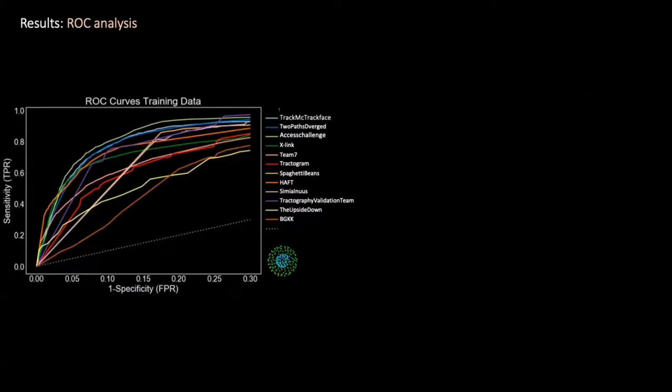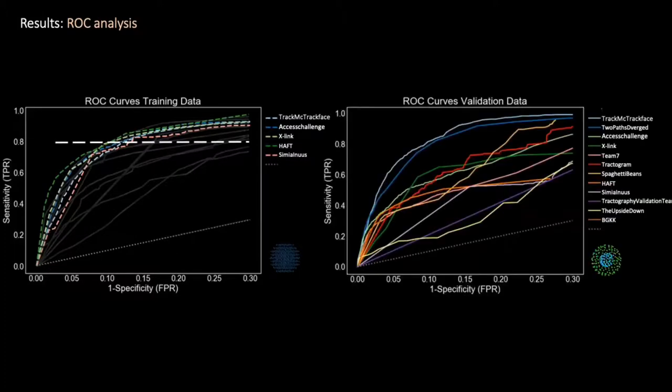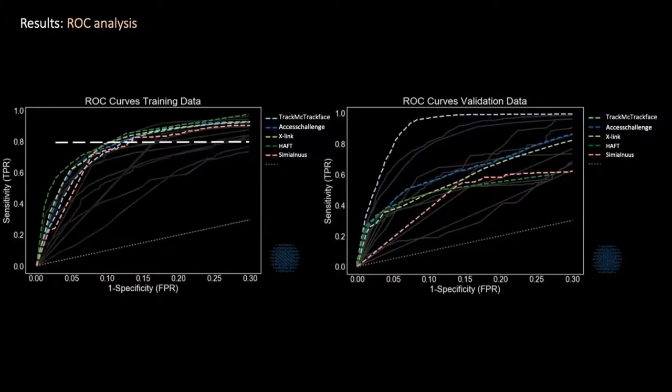Here I'm showing the ROC curves for all the submissions for the HCP acquisition scheme for the training case. And these are the overlaid ROC curves for the DSI acquisition scheme. Although there obviously is a trade-off between true and false positive reconstructions, most submissions achieve 80% sensitivity within 30% false positive rate. Note these are the results for the validation case for the HCP acquisition scheme and again for the DSI acquisition scheme.